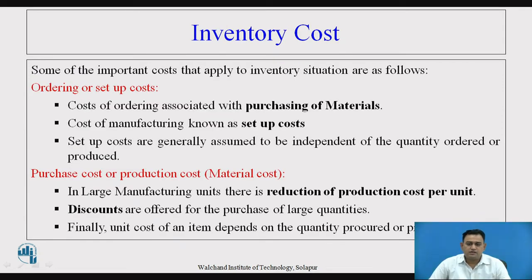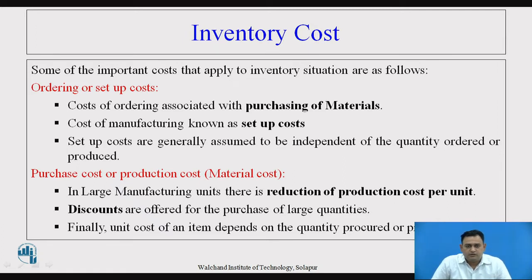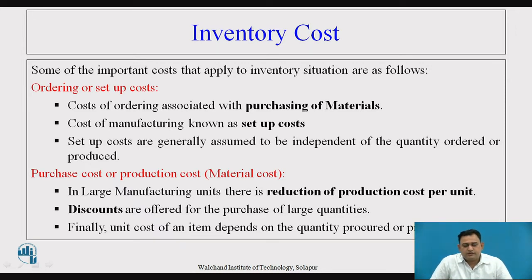Now, inventory cost — what are the costs associated with the inventory? The first is the ordering or setup cost. This is the cost of ordering associated with the purchasing of material. The overall setup required for the processing or manufacturing is called the setup cost. Setup costs are generally assumed to be independent of the quantity ordered or produced. They are a one-time setup required for the overall processing or manufacturing of the product.